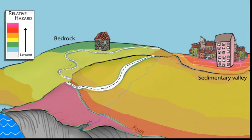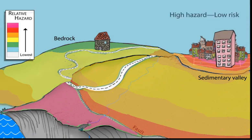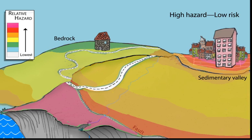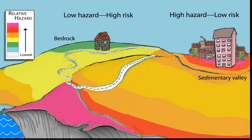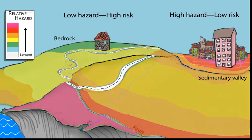Let's look at two examples. A person in a high seismic hazard zone in a well-engineered high-rise has low seismic risk. A weak structure built in a low seismic hazard zone may have high seismic risk from even light shaking.